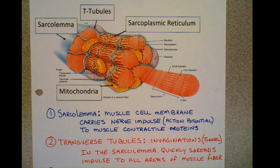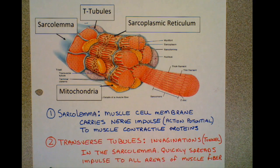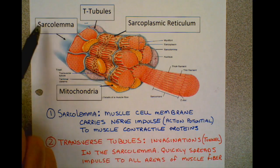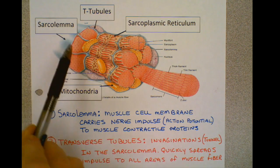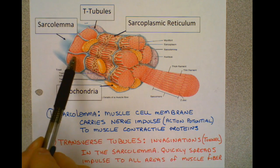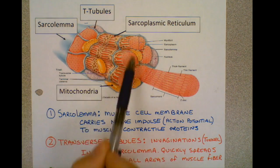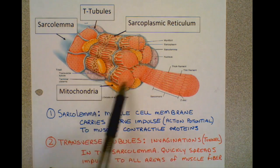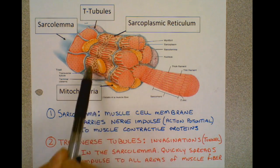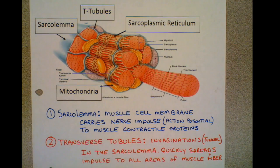A muscle cannot contract unless it gets a signal from the nervous system. The signal from the nervous system arrives, travels down the sarcolemma, down the transverse tubules, and then triggers the muscle contraction of the cell.